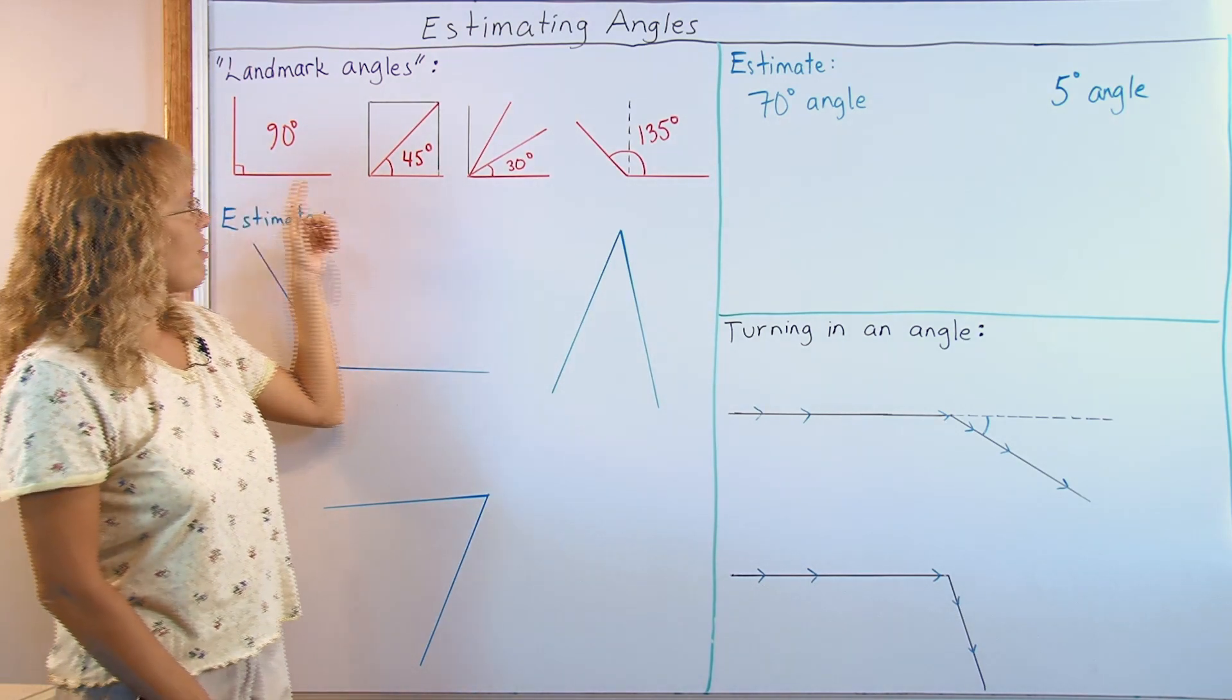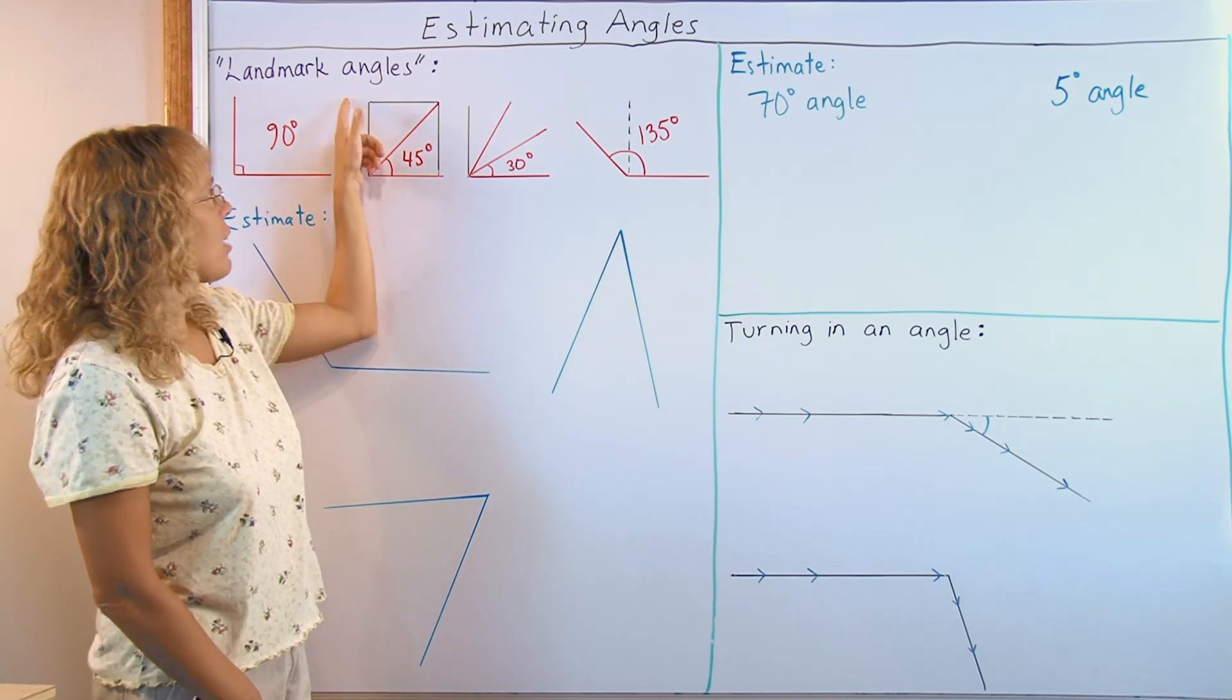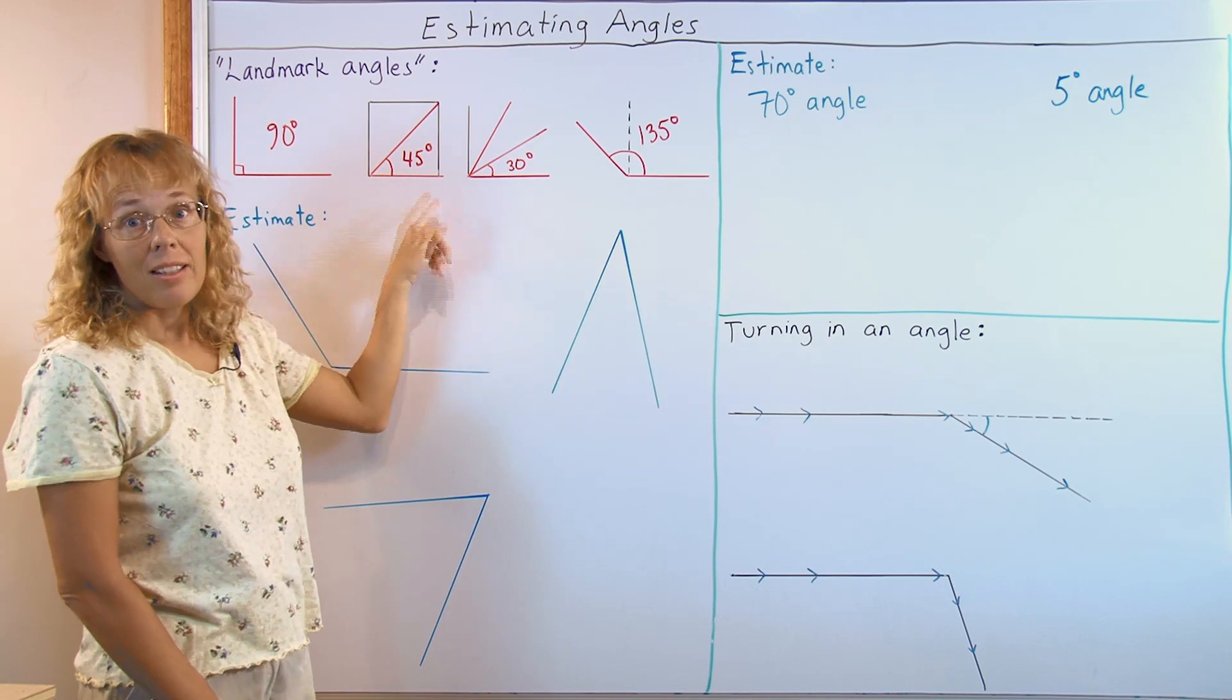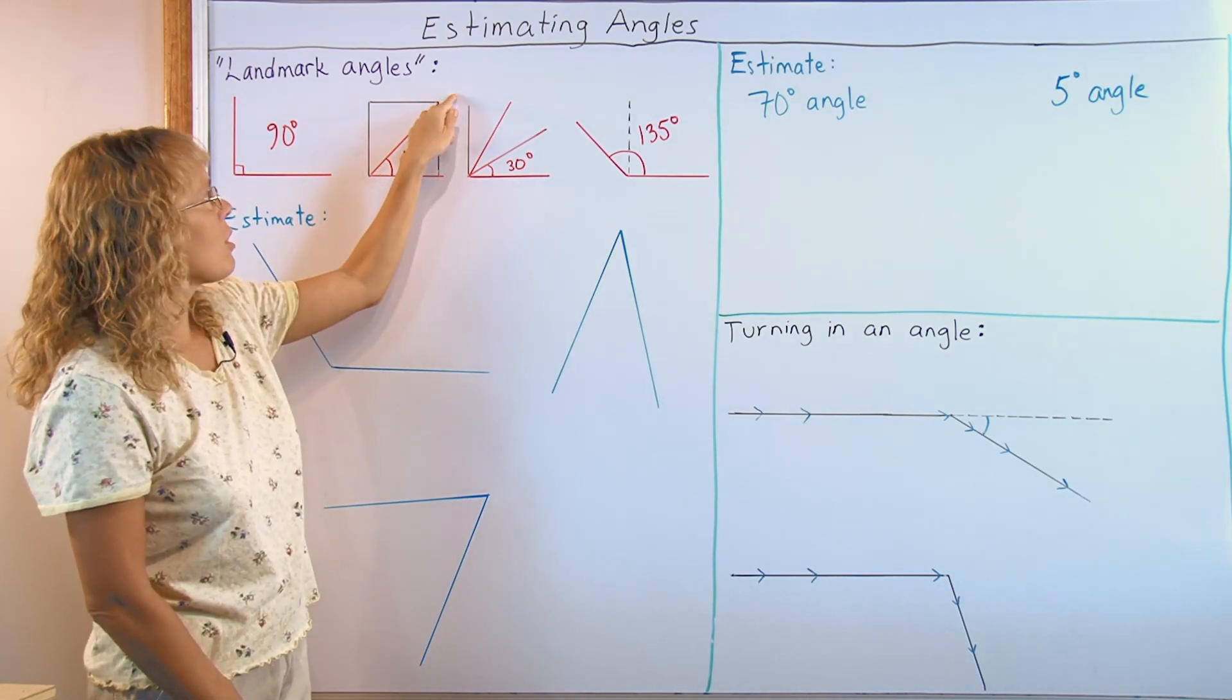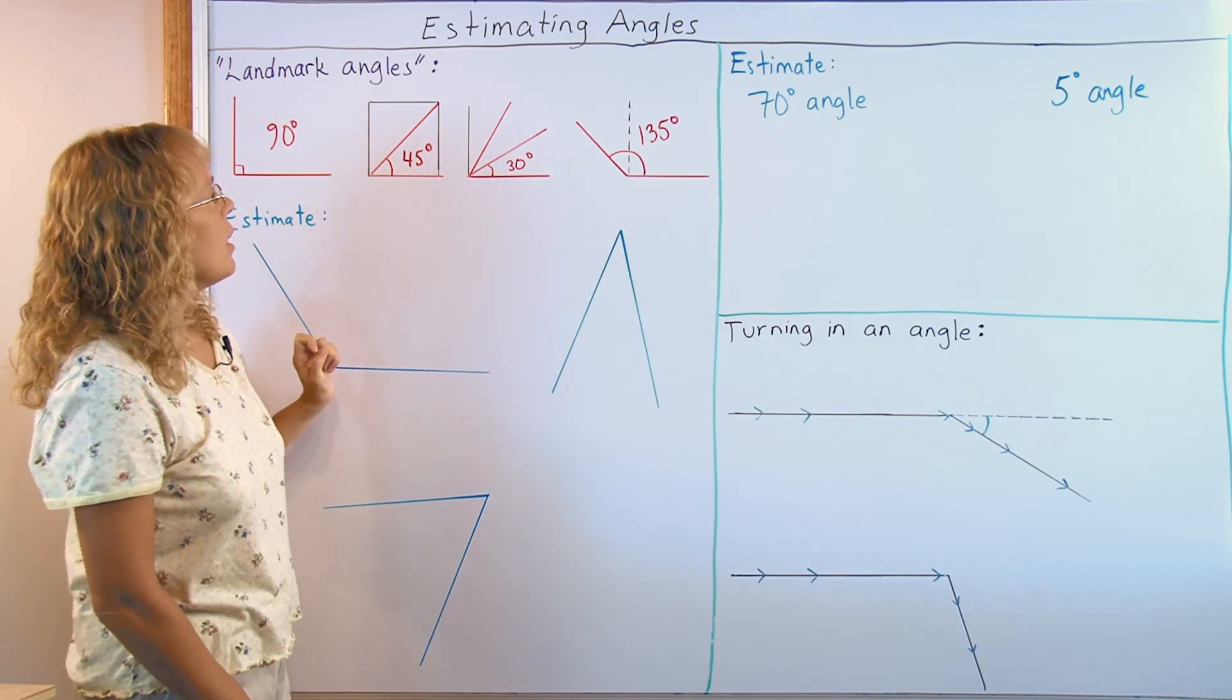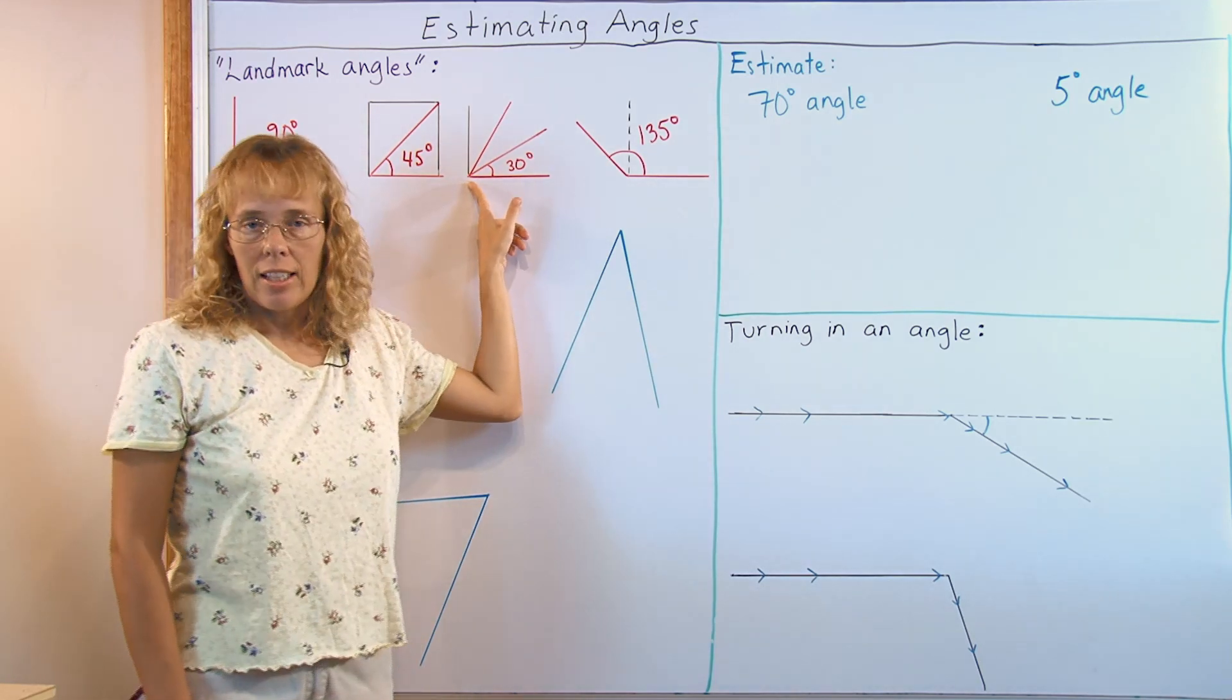And then half of that is 45 degrees. It's kind of like taking a corner of a book or something. Or here is a square I drew and then going from the corner to corner in a square, and then that makes exactly a 45 degree angle.